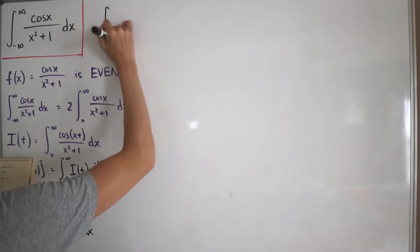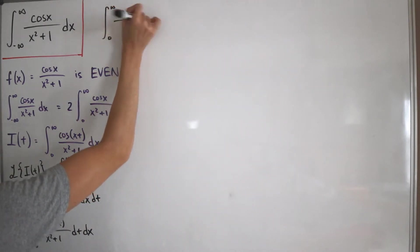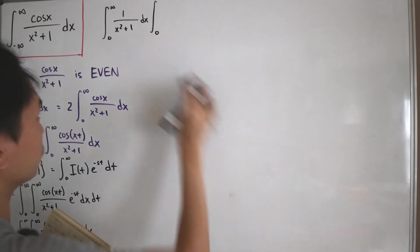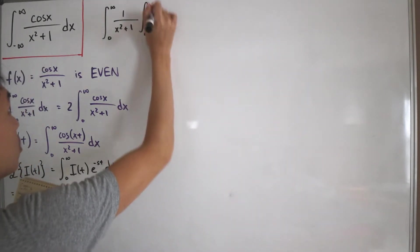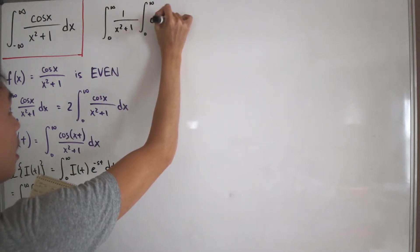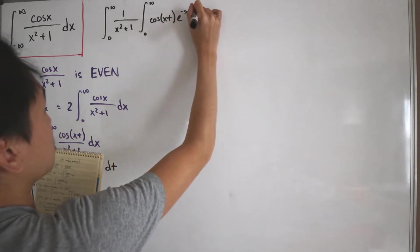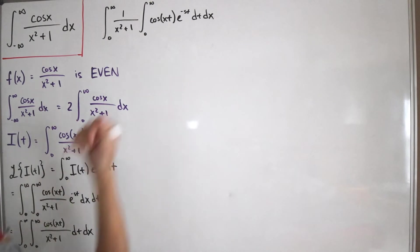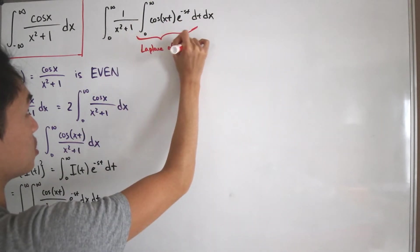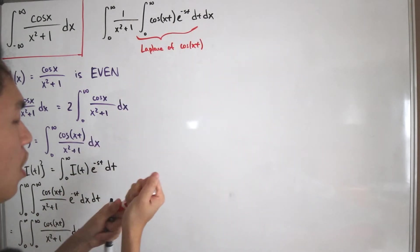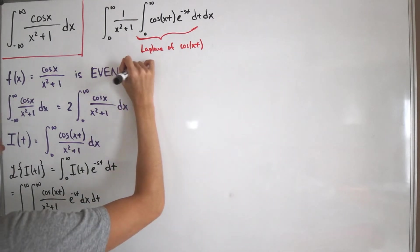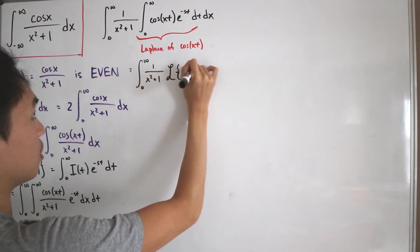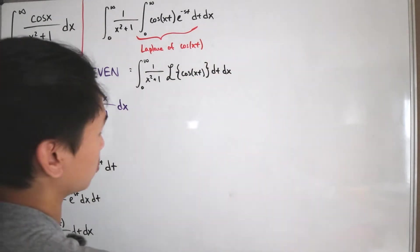Separating the integrals, I associate everything with x in one part — the 1/(x²+1) — and everything with t in another: the integral from zero to infinity of cosine(xt) times e to the negative st, dt. This inner integral over t is by definition the Laplace transform of cosine(xt). So I can replace it with the Laplace symbol, giving us the integral from zero to infinity of 1/(x²+1) times the Laplace transform of cosine(xt), dx.